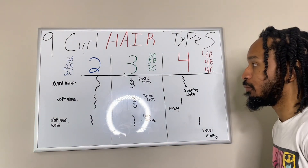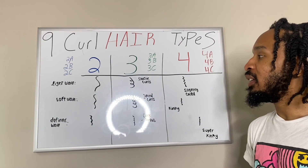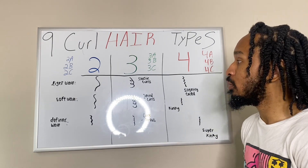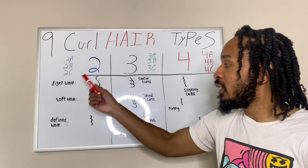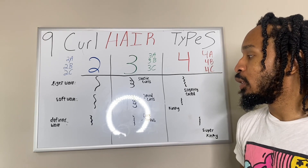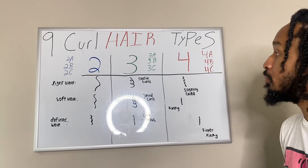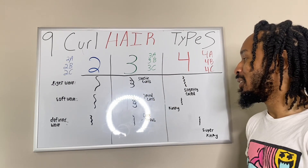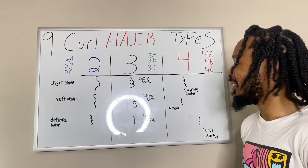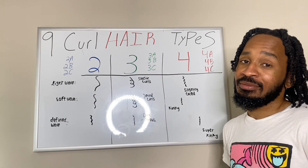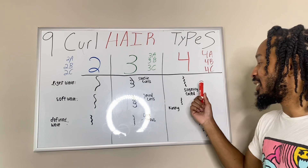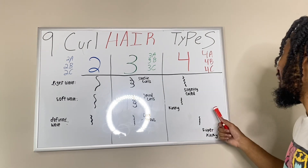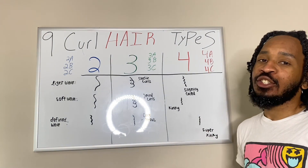Let me break it down simple for y'all. 2A is normally the light wave curl, 2B is normally a soft wave curl, 2C the fine wave curl, 3A the classic curl, 3B the spiral curl, 3C the corkscrew, 4A slightly coiled, 4B is the kinky coils, and 4C the super kinky.